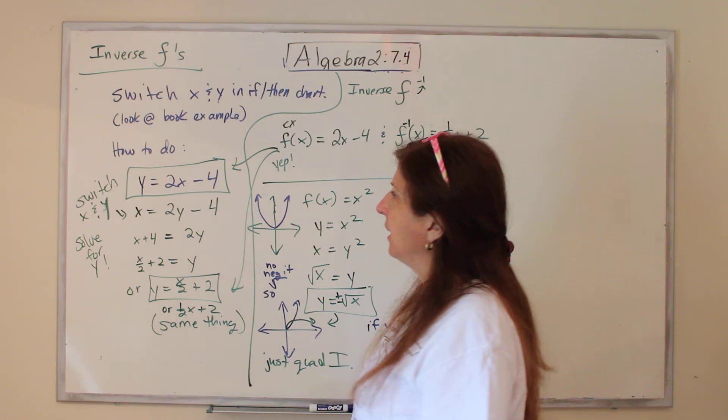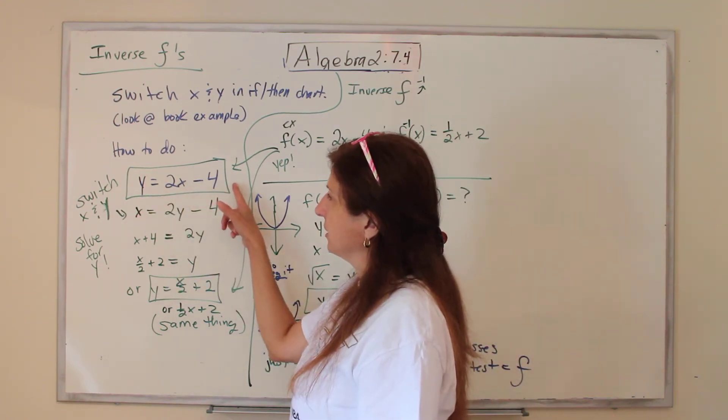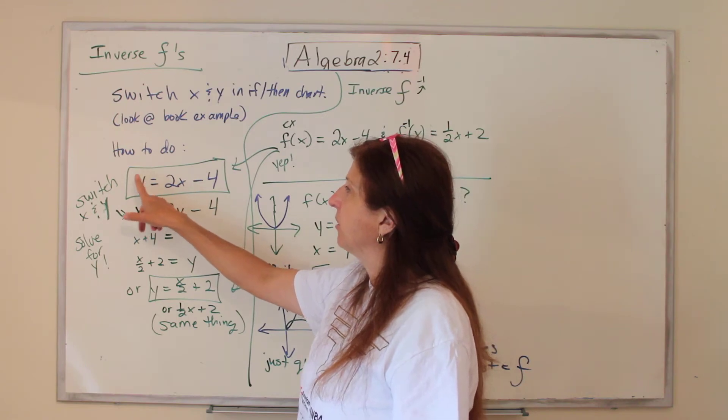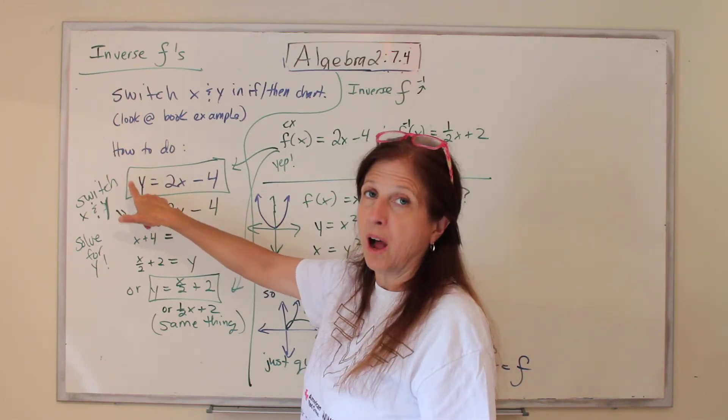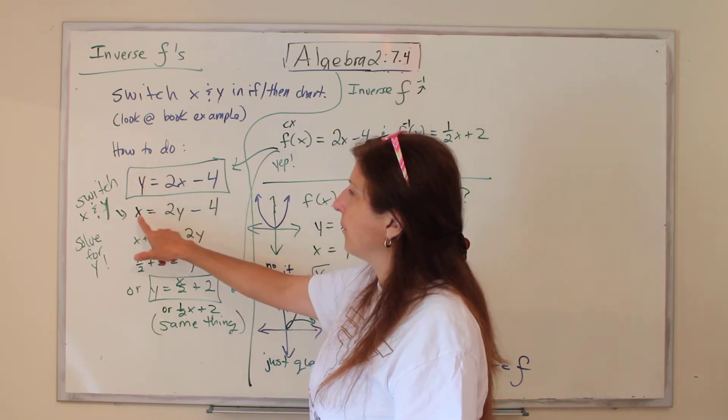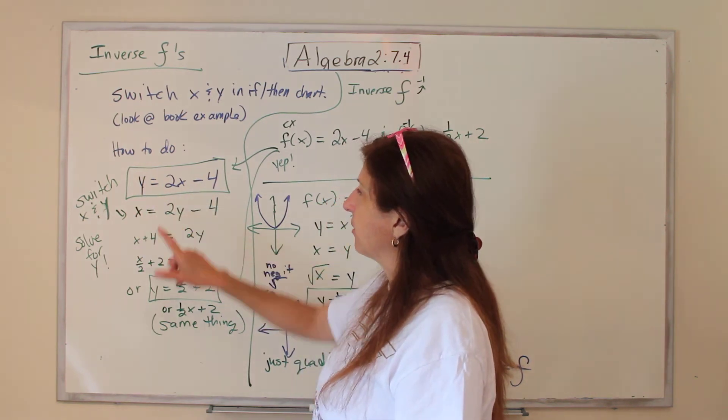This is what you do instead. You will be given a function like this. It could say F(x), or it could say Y. If it says F(x), rewrite it with a Y. Step 1. Step 2, where there is the Y, write X, and where there is the X, write Y.